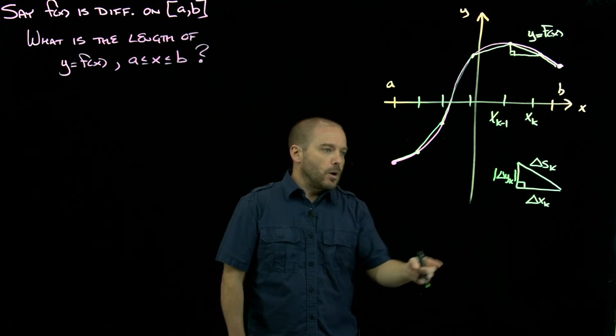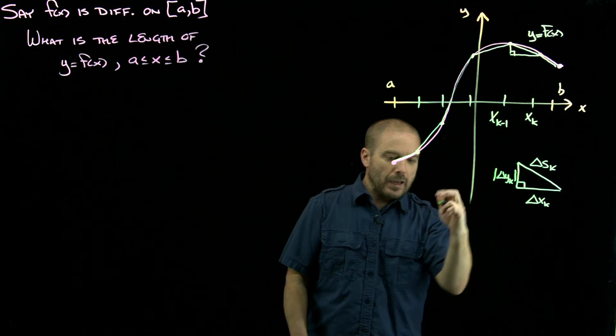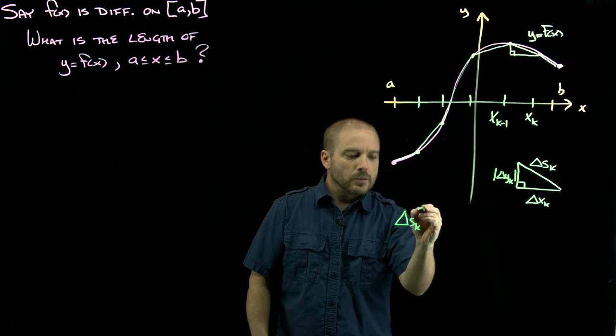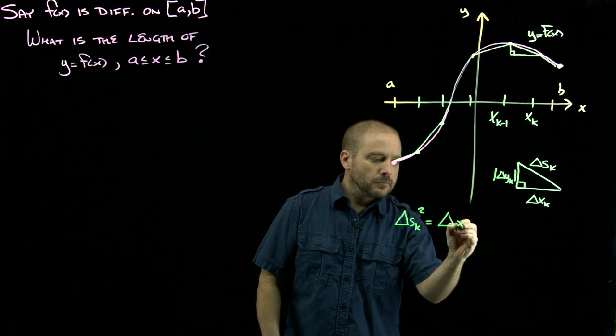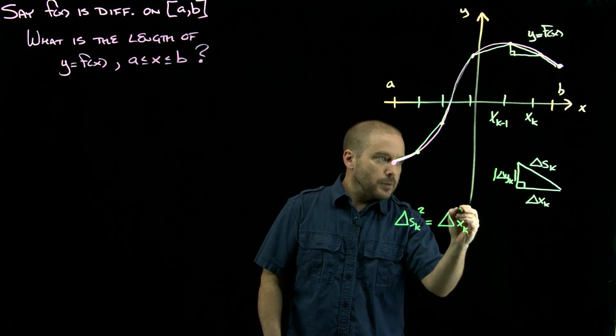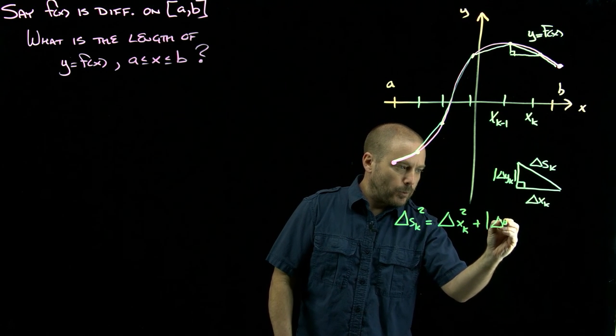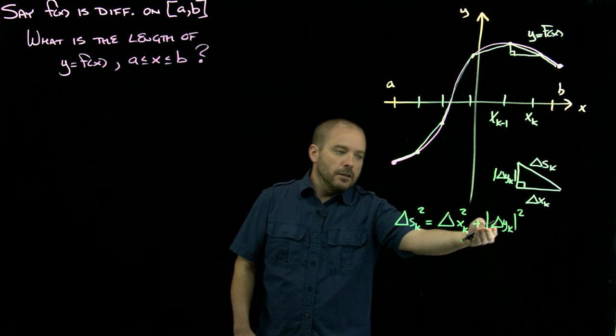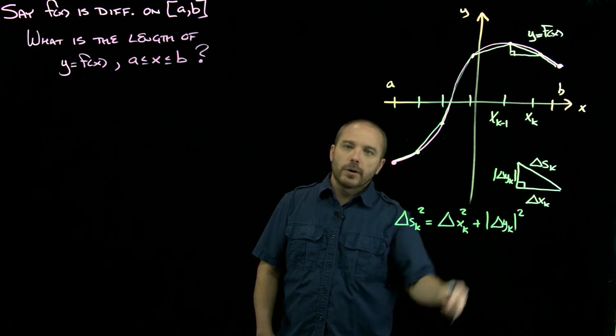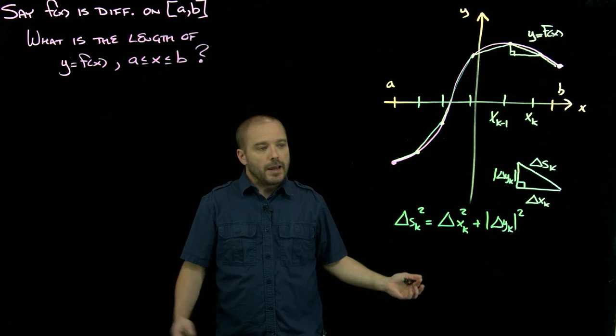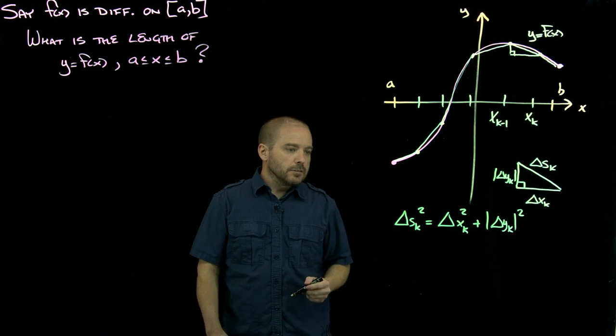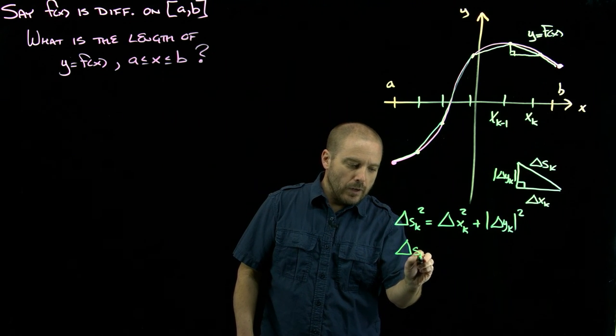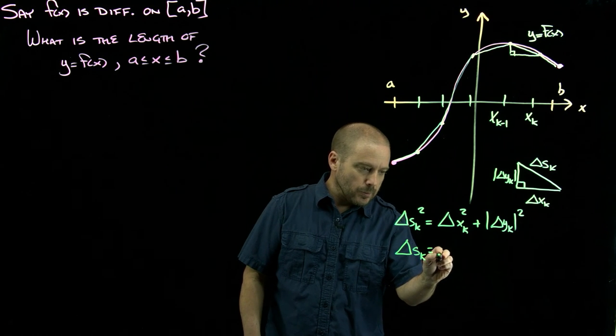How can we relate these quantities to each other? Well, Pythagoras tells us delta s sub k squared is delta x sub k squared plus absolute value of delta y sub k squared. We can drop that absolute value because we're squaring it, so positive or negative, this quantity would end up positive. And I want to take the square root to isolate delta s sub k.